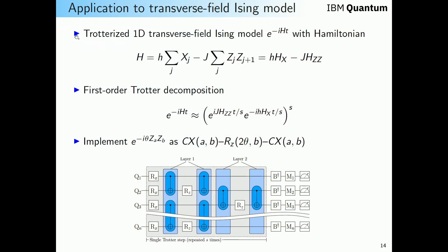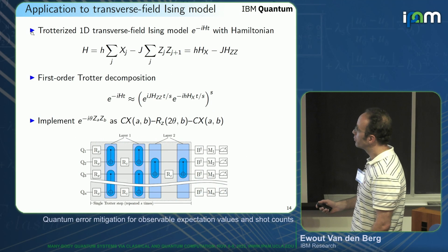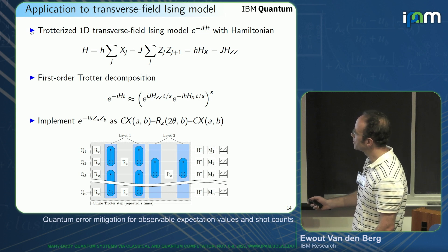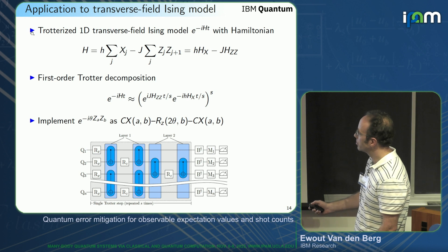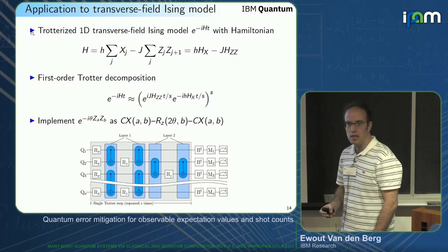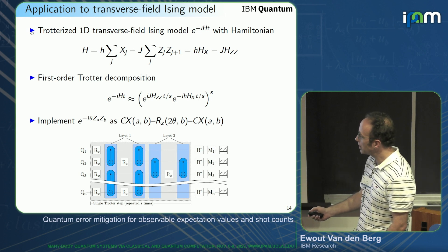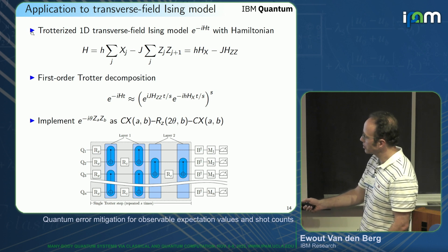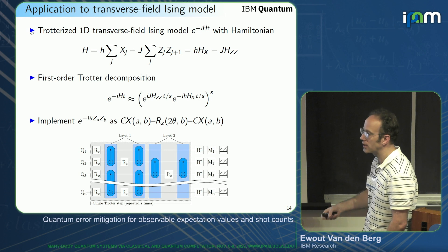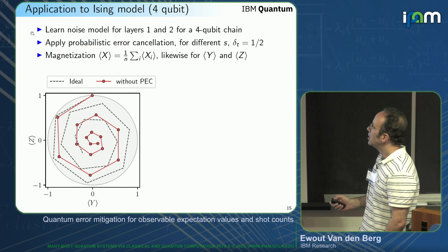As an application — Abhinav gave a talk on Monday with a lot of extensions and big results; this is an earlier result. It looks at the trotterized version of a 1D transverse field Ising model with a Hamiltonian consisting of weight-one terms and nearest-neighbor ZZ interactions. The first-order Trotter decomposition splits into X terms (implemented with Pauli X rotations) and ZZ terms (implemented by a CZ, Rz, CZ sequence). Since we want to apply these on every pair, that gives overlapping gates, so we split into two different layers: layer one starting at every even qubit, layer two at every odd qubit.